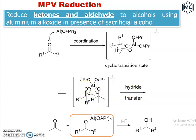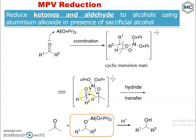The product is an isopropoxide attached to aluminum (diisopropoxide). On protonation, this gives the alcohol. The original ketone is converted to an alcohol, and the isopropoxide part becomes acetone. Finally, protonation yields the alcohol product.